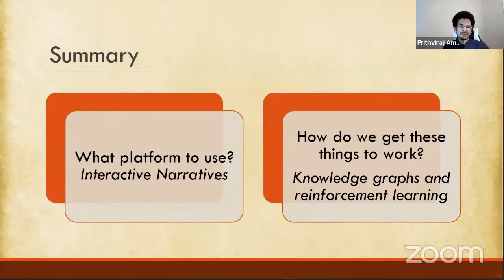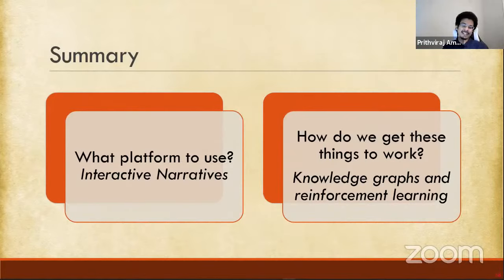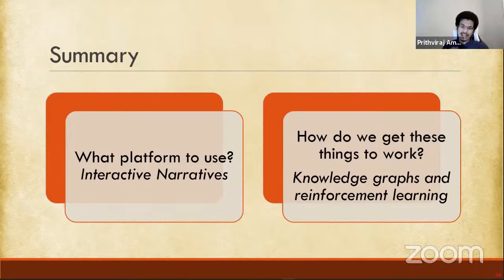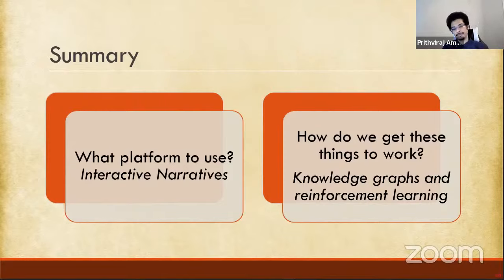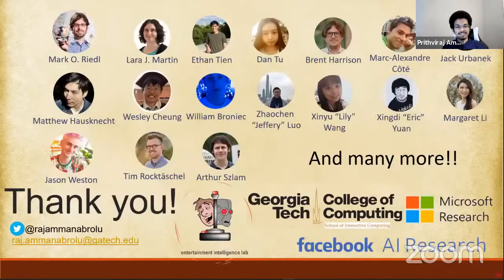Summary. If there are two things you remember from this entire talk, it should be these: first, the platform we should be using to get interactive and environmentally grounded language agents is interactive narratives. And second, how do you actually get these things to work with any reasonable accuracy? The answer is knowledge graphs and reinforcement learning. That's the three-second version of this entire talk. Thank you.